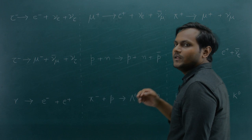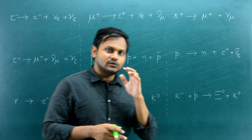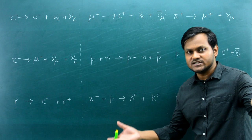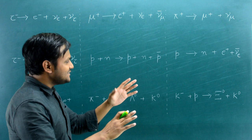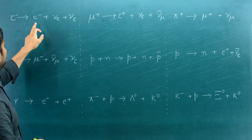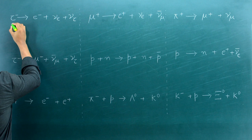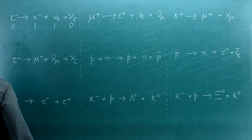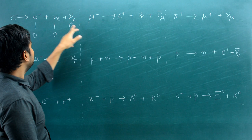First: a tau particle becomes an electron and emits an electron neutrino and tau neutrino. Checking the electron lepton number: tau = 0, electron = +1, electron neutrino = +1, tau neutrino = 0. Right-hand side = 2, left-hand side = 0 — not conserved. The tau lepton number is conserved (1 = 1), but the electron lepton number is violated. An electron cannot be emitted along with an electron neutrino. This reaction does not happen in nature.